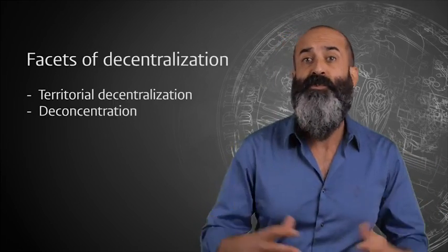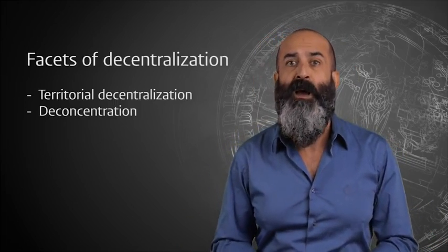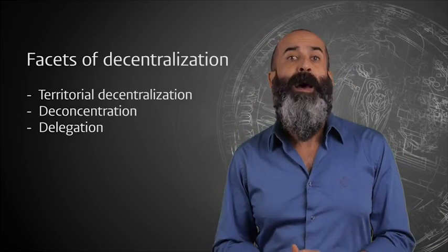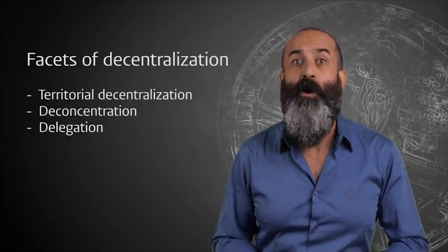There are other ways to decentralize political power. Under deconcentration, the powers at the center could be shared between branches of state bureaucracy. Under delegation, powers of the center could be temporarily transferred to semi-public bodies or third parties. For our purposes in this course, and indeed in the academic field of comparative federalism...